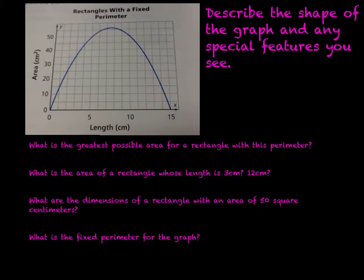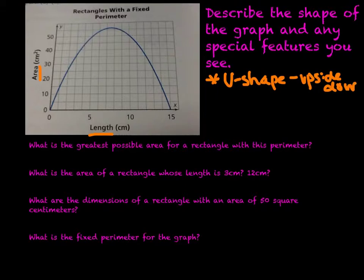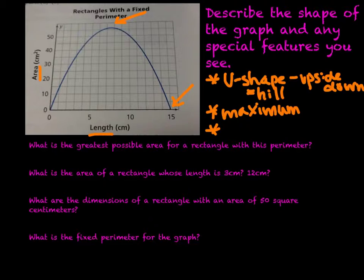Now, let's talk. We have a graph here: Rectangles with a fixed perimeter, describing length versus area. We need to describe the shape of the graph and any special features. I see a U shape, upside-down, like a hill. It has some defining features: it clearly has a maximum where it doesn't go any higher, and it also crosses the x-axis at special points. So it crosses twice on the x-axis.